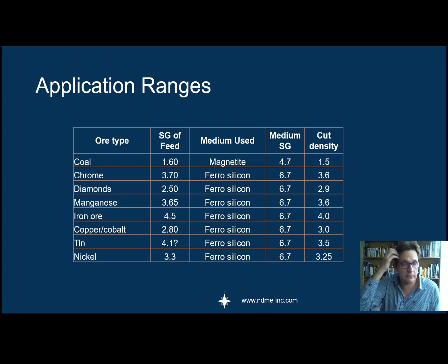The density separation happens in a couple of commodities, not limited to what I've got here, but coal being one, chrome, diamond, manganese, iron ore, copper, cobalt, tin, and nickel. As you can see, ferrosilicon is often the medium here. What I need to also mention is that not all ferrosilicon is created equal—there's different grades of it, i.e., finenesses, particle shape. If you go to super high densities trying to cut at about 3.8 or higher, at 4, often in iron ore, or 4.2, you need to use special ferrosilicon that's got spherical shape.